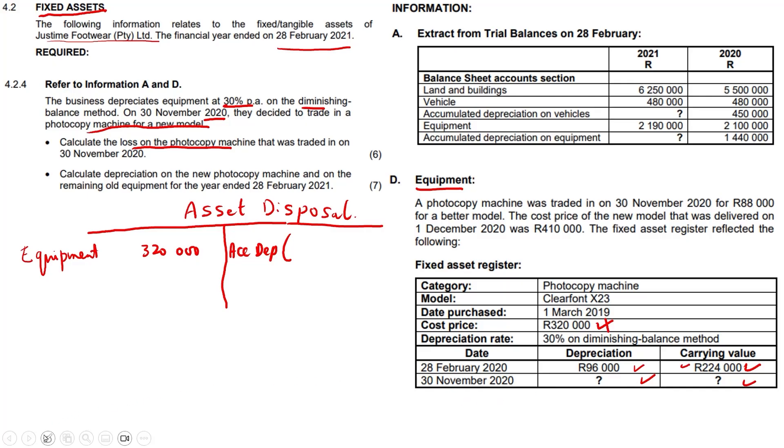Let me change the color here for this workings. Accumulated depreciation will be the $320,000 that it cost us minus the carrying value of $224,000, and we arrive at $96,000 as our accumulated depreciation at beginning of year. That's $96,000 at beginning of year, and we need to add current depreciation to it.